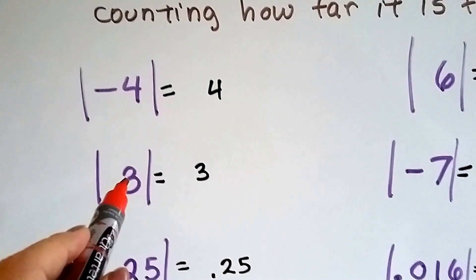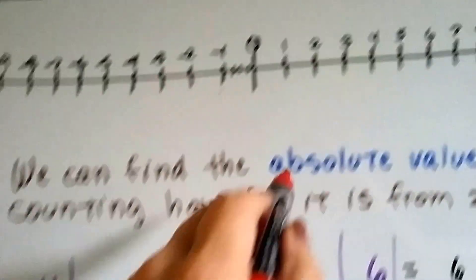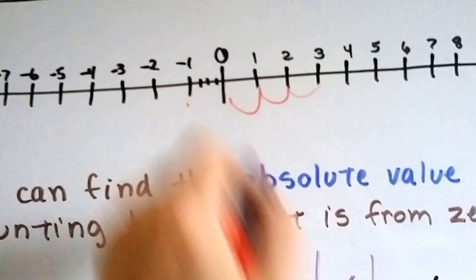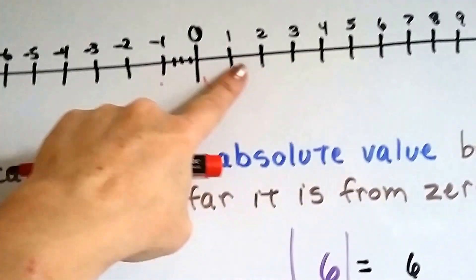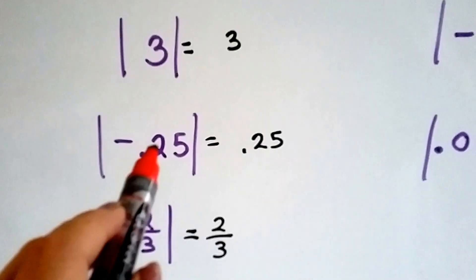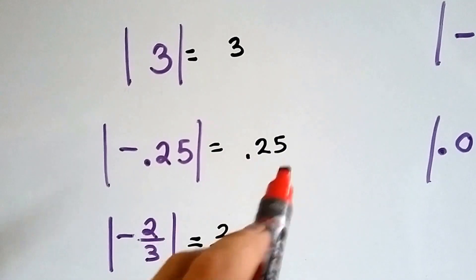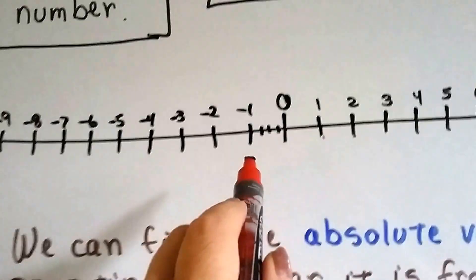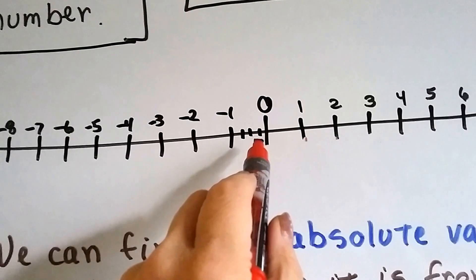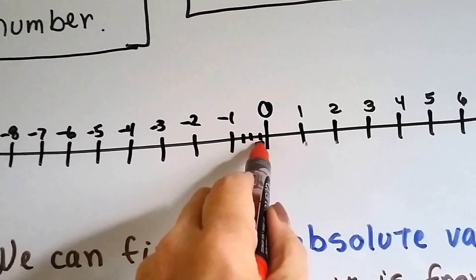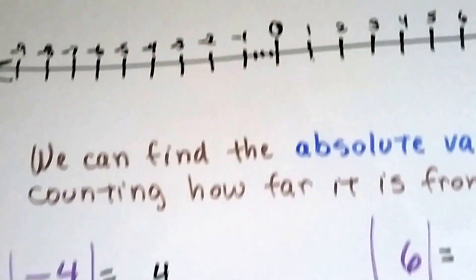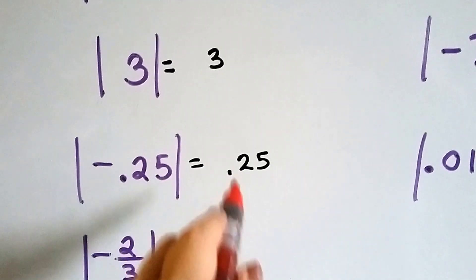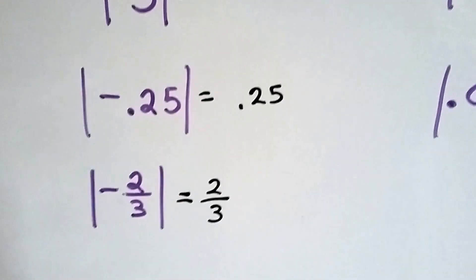How about three? The absolute value of three is three because it's one, two, three spaces away from zero. Negative point two five: the absolute value is point two five. Here's negative one, so negative point two five would be right here — this first little line. How far away is it from zero? It's point two five spaces from zero, so the absolute value is point two five.